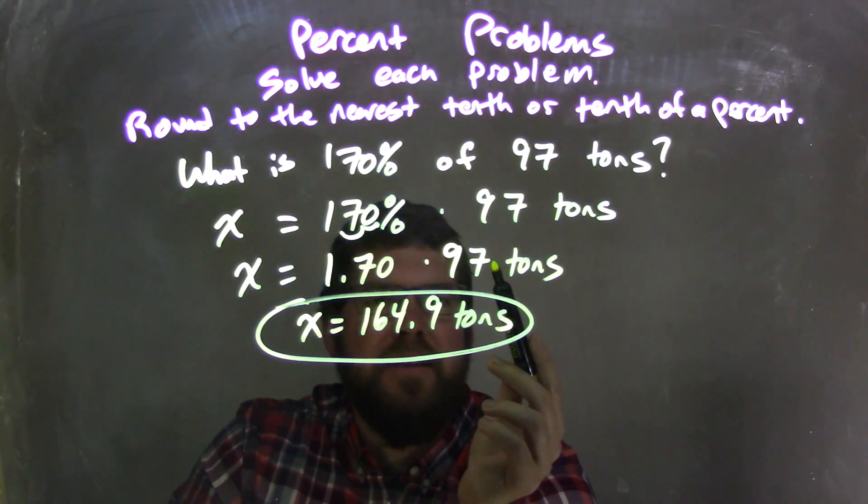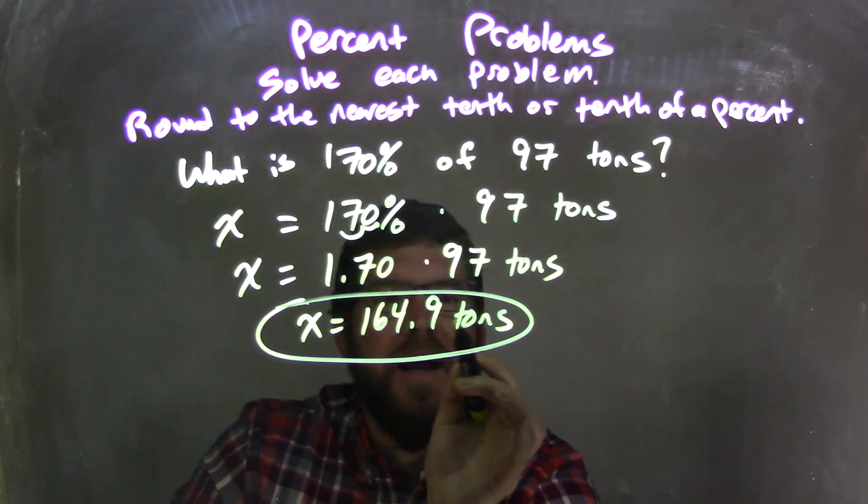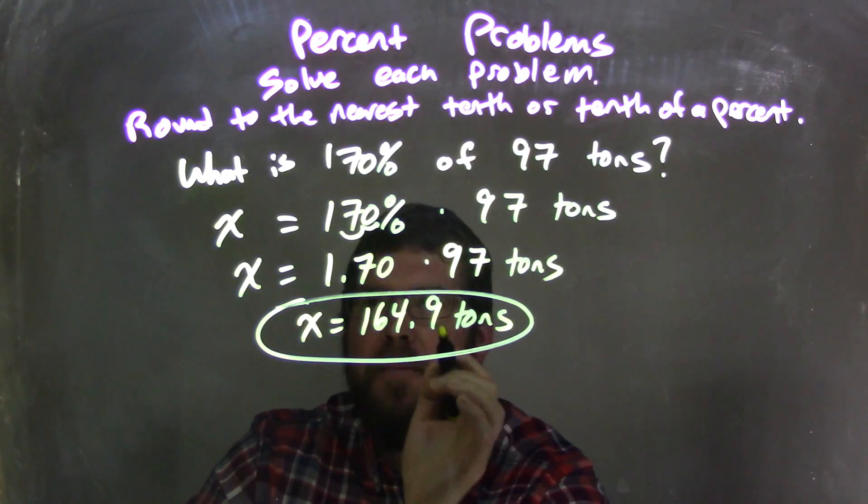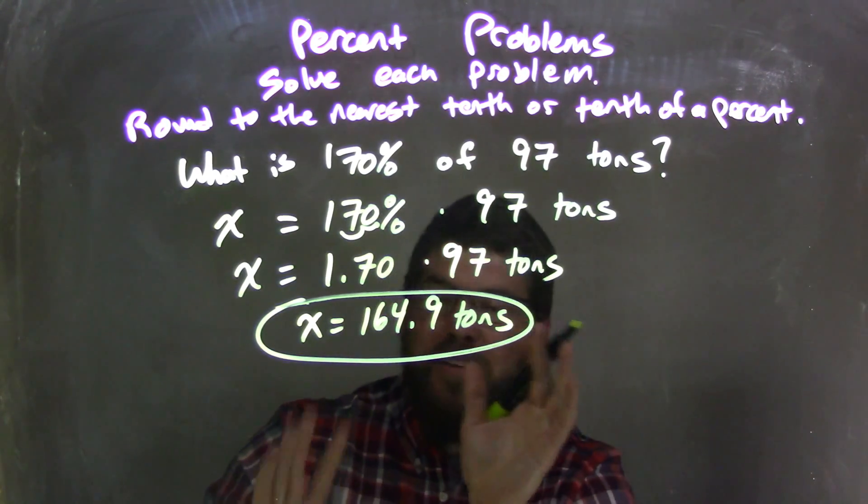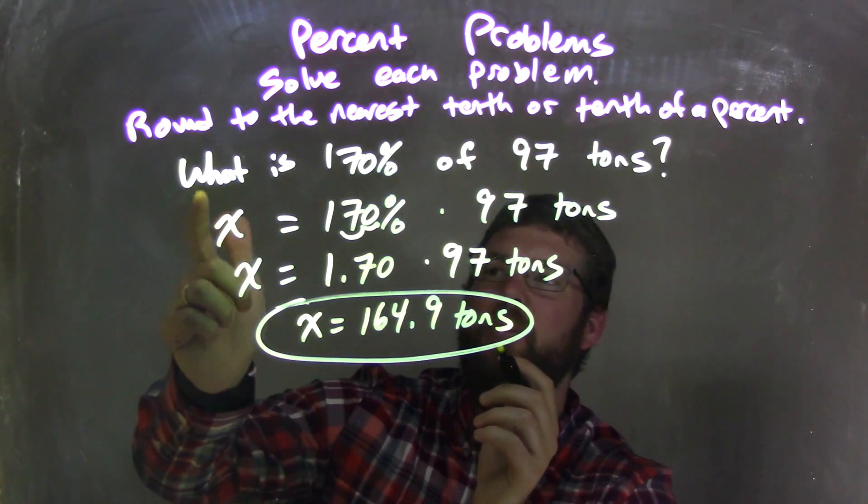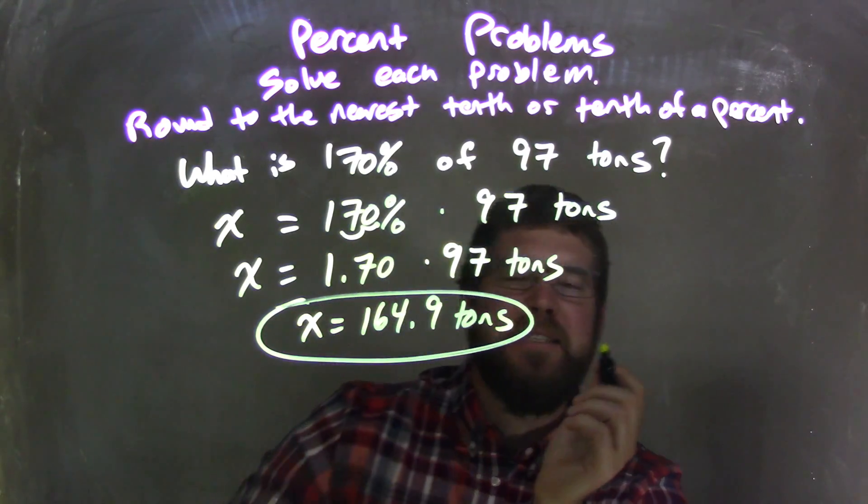I multiplied that by 97 in my calculator, giving me X equals 164.9 tons. Didn't need to round, it was already there to the tenth, there's nothing else to the right. So that's our final answer, and it answers the question here of 164.9 tons is 170% of 97 tons.